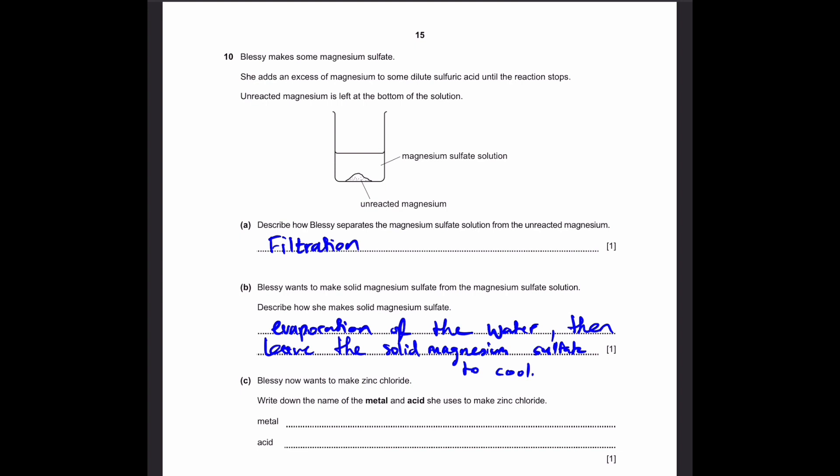Part C. Blessie now wants to make zinc chloride. Write down the metal and acid she used to make zinc chloride. Of course since this is zinc chloride, the metal is going to be zinc. And the acid, since this is a chloride, we of course need hydrochloric acid, since this is the main acid which contains chlorine in it. The reaction will form zinc chloride and hydrogen gas.